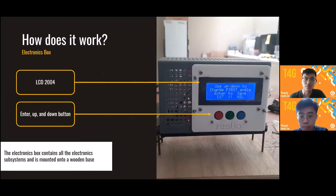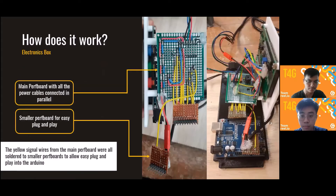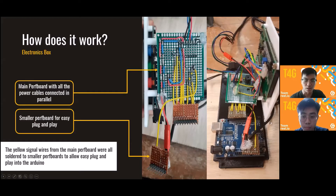Our entire device consists of two systems: the electronic system and the mechanical system. What you can see here is the electronics box housing all of the electronic subsystems. We use perf boards shown in green, as they are more reliable and provide more permanent connections compared to a breadboard.